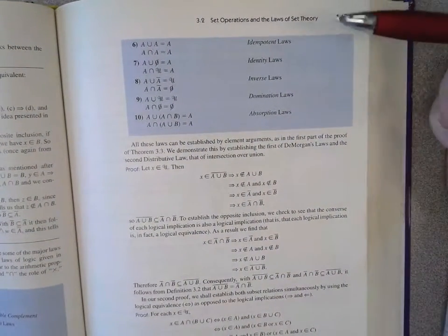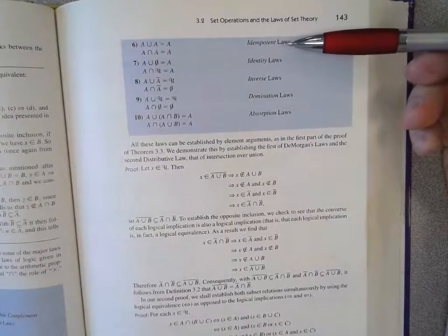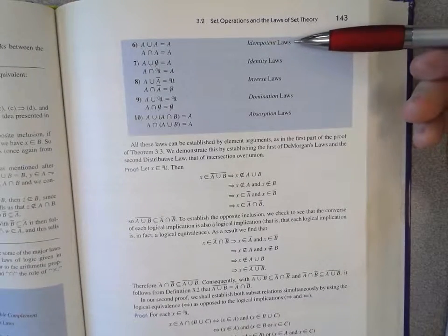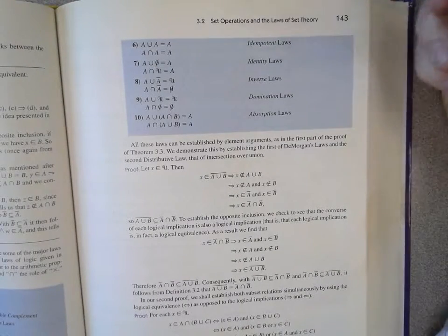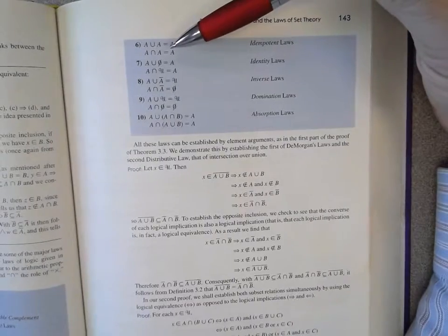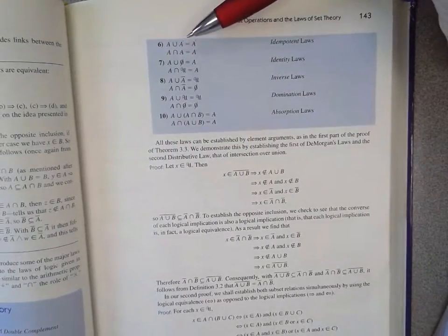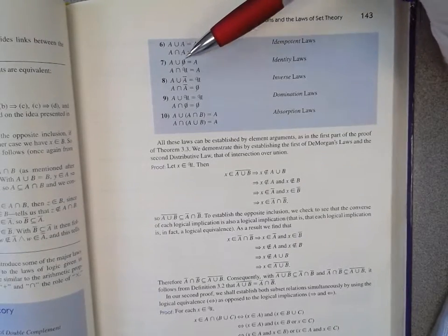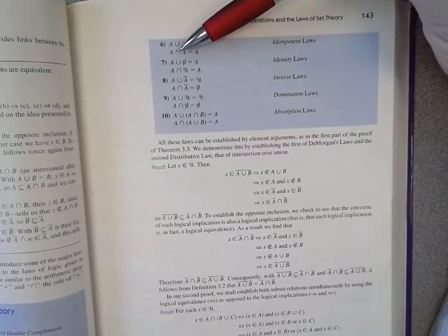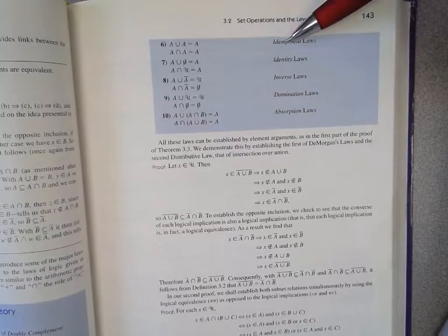On the top of page 143, you have the idempotent laws. A union A is A, A intersect A is A. You've seen that before. P or P is P. P and P is P. So you've seen that.